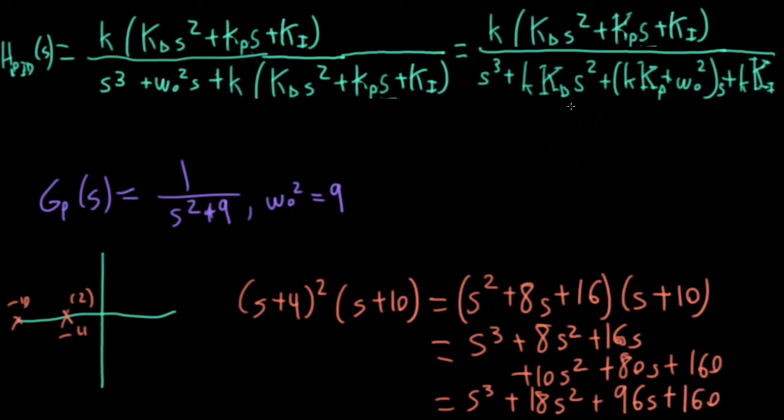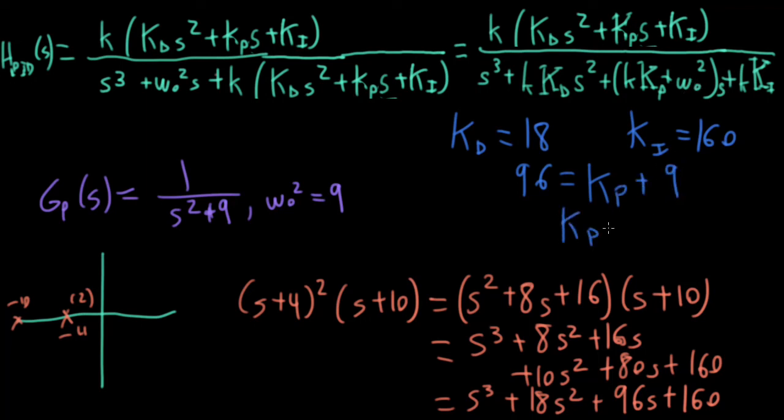And now to pick kp, kd, and ki, I need to match up the various terms. So the little k here is equal to one. So I can match up kd with 18. That's here. I can match up ki with 160. That's the constant term. And let's see, I want to match up 96 here with the kp plus omega naught squared, which is nine. So kp is going to equal 87. So that's not really a practical design example. That's just an example.